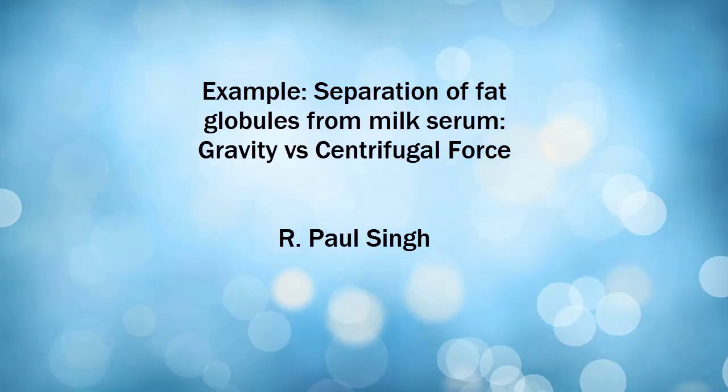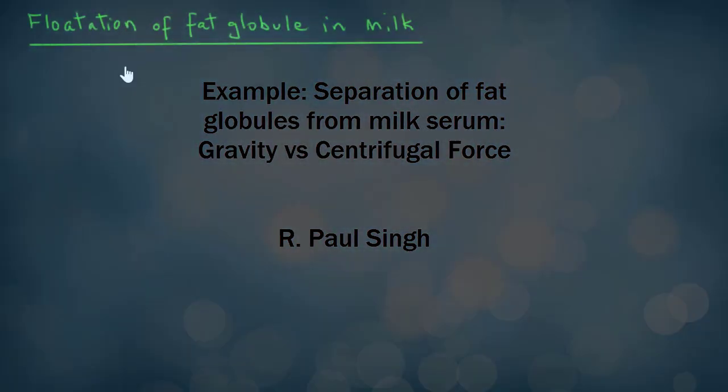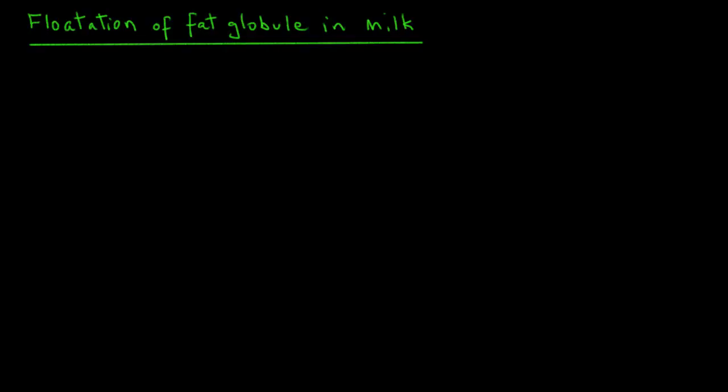In this example, we will consider the difference between gravity separation and centrifugal separation. The example we have is of flotation of a fat globule in milk. Now we know that if you have non-homogenized milk and you leave it for a few hours, there is a formation of a layer of cream on the top. What has happened is that the fat globules in milk have floated up to the top surface.